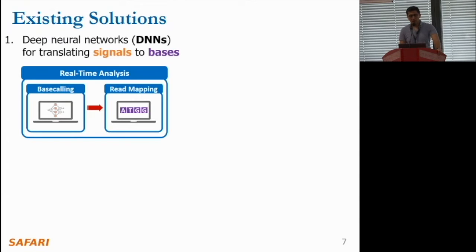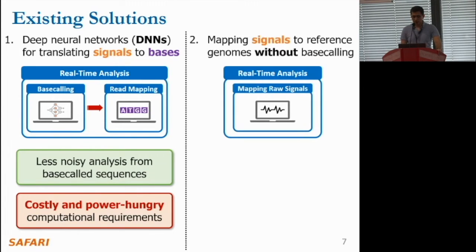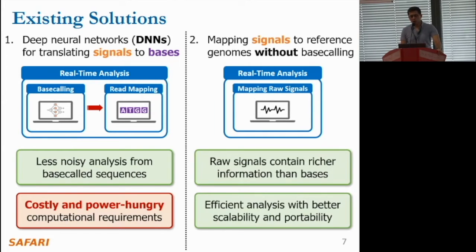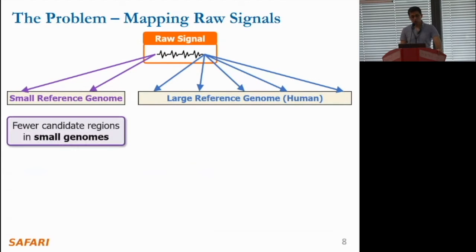Before diving into our mechanism, let's look at the two existing main solutions for real-time genome analysis. The first is to use deep neural networks (DNNs) to translate signals to bases, and these base-called sequences are then analyzed in real time using, for example, a standard read mapping step. DNNs provide less noisy analysis from base-called sequences; however, these solutions come with high computational and power demands, which particularly creates challenges for portable sequencing. The second common solution is to directly map the raw signals to reference genomes without using DNNs or base-calling mechanisms.